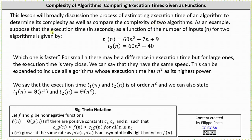As an example, suppose that the execution time in seconds as a function of the number of inputs n for two algorithms is given by t sub one of n equals 60n squared plus 7n plus 9, and t sub two of n equals 60n squared plus 40. Which one is faster? For small n there may be a difference in execution time, but for large n the execution time is very close, because both functions are quadratic functions — degree two functions — because of the n squareds. We can say the algorithms have the same speed.